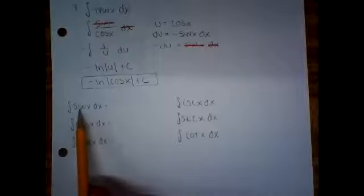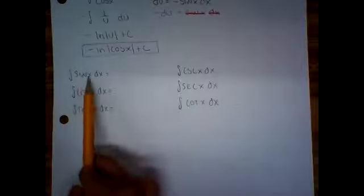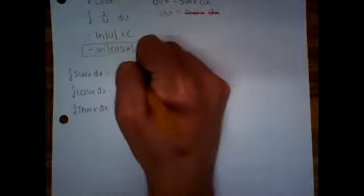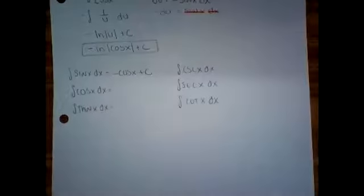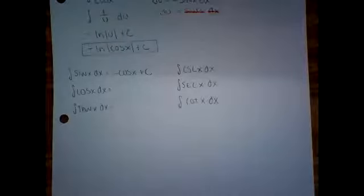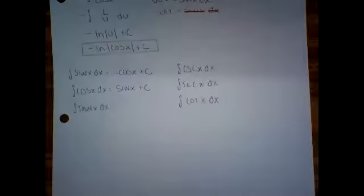All right. Now sine and cosine, we kind of just answer them. Give me a function that if you did the derivative, you would get sine, like sine's the answer. Negative cosine. So negative cosine of x plus c. And then anti-derivative of cosine. So you need to come up with a function that if you did the derivative, cosine would be the answer. It'd be sine of x plus c. So those ones we kind of just think about, just do it backwards.